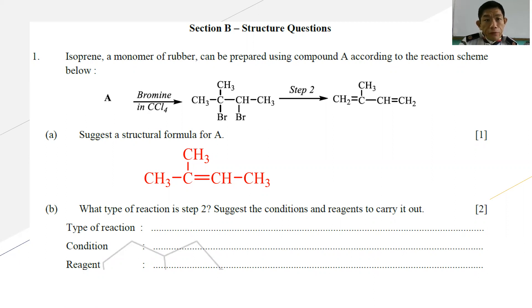Question starts with number one. Isoprene, a monomer of rubber, can be prepared using compound A according to the reactions below. So we have A with bromine in CCl4, and you form this intermediate of 2,3-dibromo-2-methylbutane. And then through step 2, you have the monomer of isoprene, which is 2-methylbutane-1,3-diene. So part A suggests a structural formula for A. Based on the structure, you can see that you form a dibromo here, especially after reacting with bromine in CCl4. So this will give you the impression that in between C2 and C3, there shall be a C double bond C. The suggested structural formula for A should be the following, where you have CH3-C(CH3)=CH-CH3.